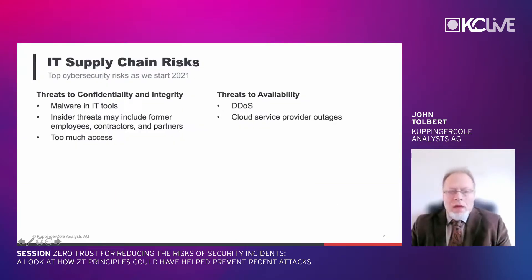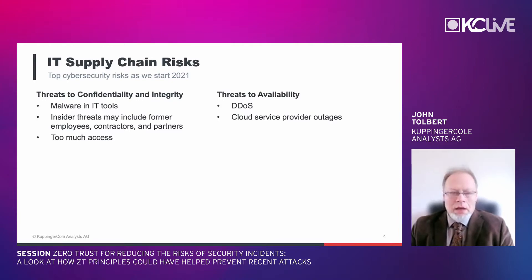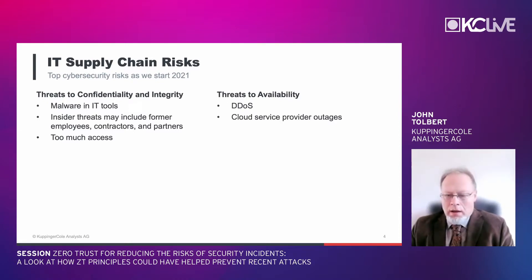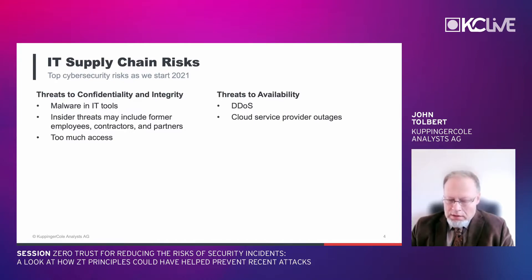With SolarWinds — also known as SolarGate — the attack involved getting malware into an IT supplier's network management software. What was particularly insidious is that the APT threat actor was able to embed it into the build process, which then allowed it to be used against thousands of downstream organizations.